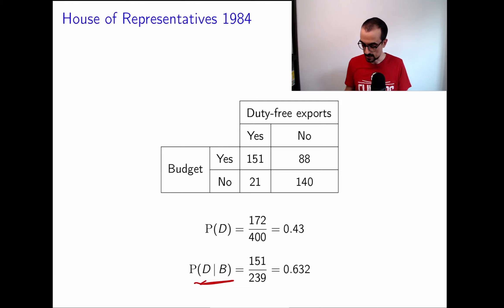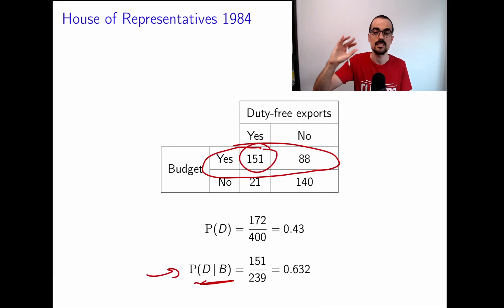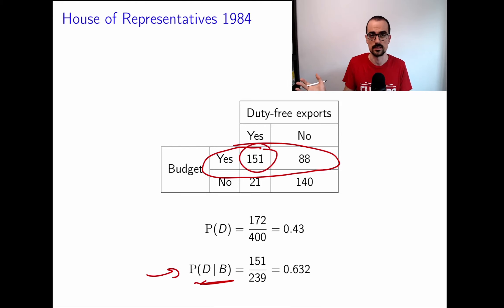We're conditioning on the probability of the budget being a yes. We only consider those representatives, and we see that the probability of D given B changes a lot. So these things are clearly not independent by our definition of independence.